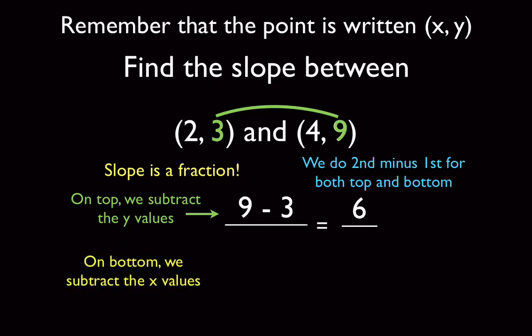When I do 9 minus 3, I'm going to get 6. And this could be negative or positive. We're going to keep our negative signs if they are. We don't always take the bigger minus the smaller. We just subtract them in order, right? Second one minus first one. Now we're going to look at the bottom, which is the x values. So we're going to take 4 and 2, and we're going to subtract them. 4 minus 2 is 2. Simple as that. The only thing left to do, we don't leave a fraction as 6 over 2. We simplify it if possible, and that gives us 3 over 1. And that's it. That's the only thing we have to do.